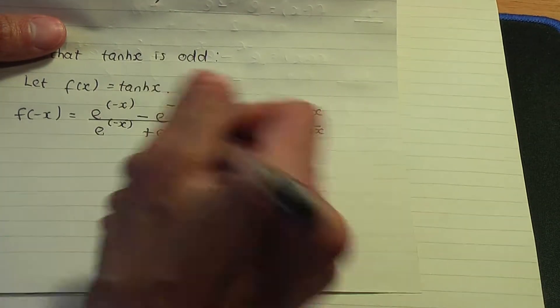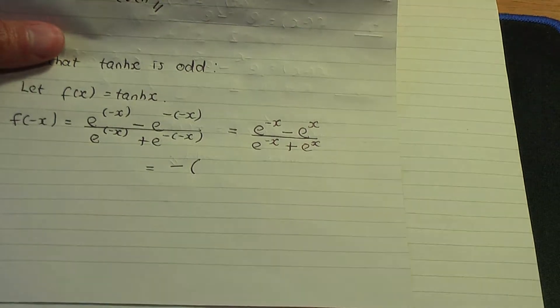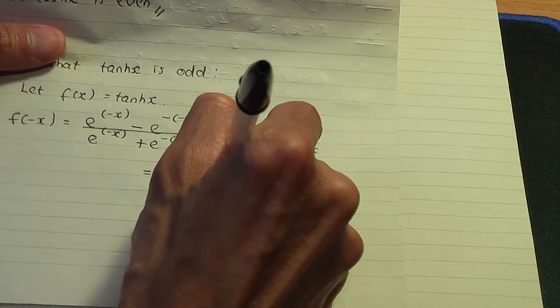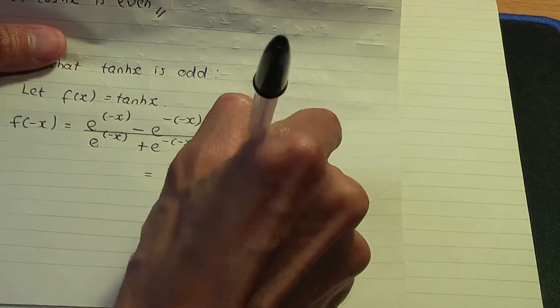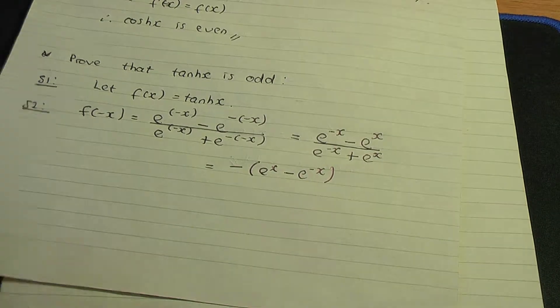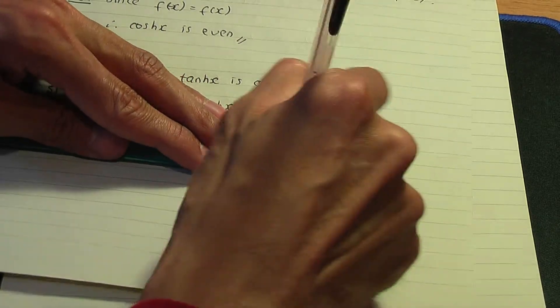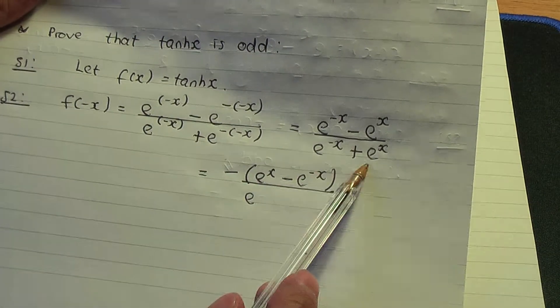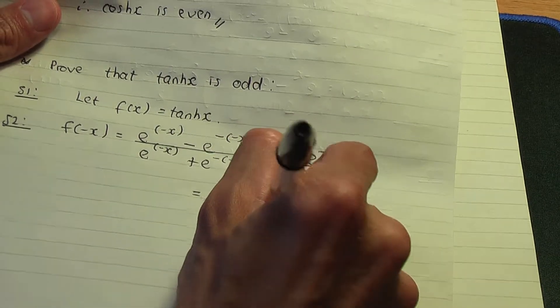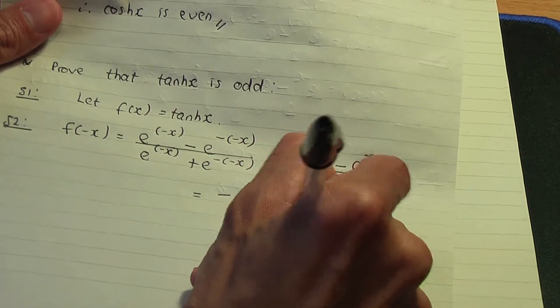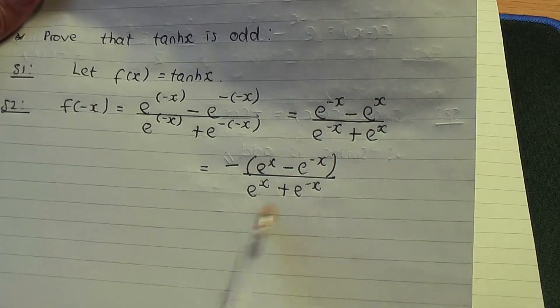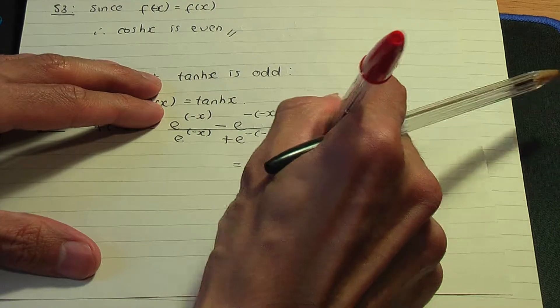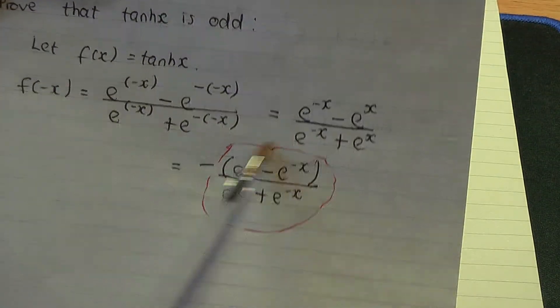If I take out a minus common factor, we're going to end up with e^x minus e^(-x) divided by, let me swap these terms, e^x plus e^(-x) on the bottom. If you cast your eyes to this function that I've highlighted in red...